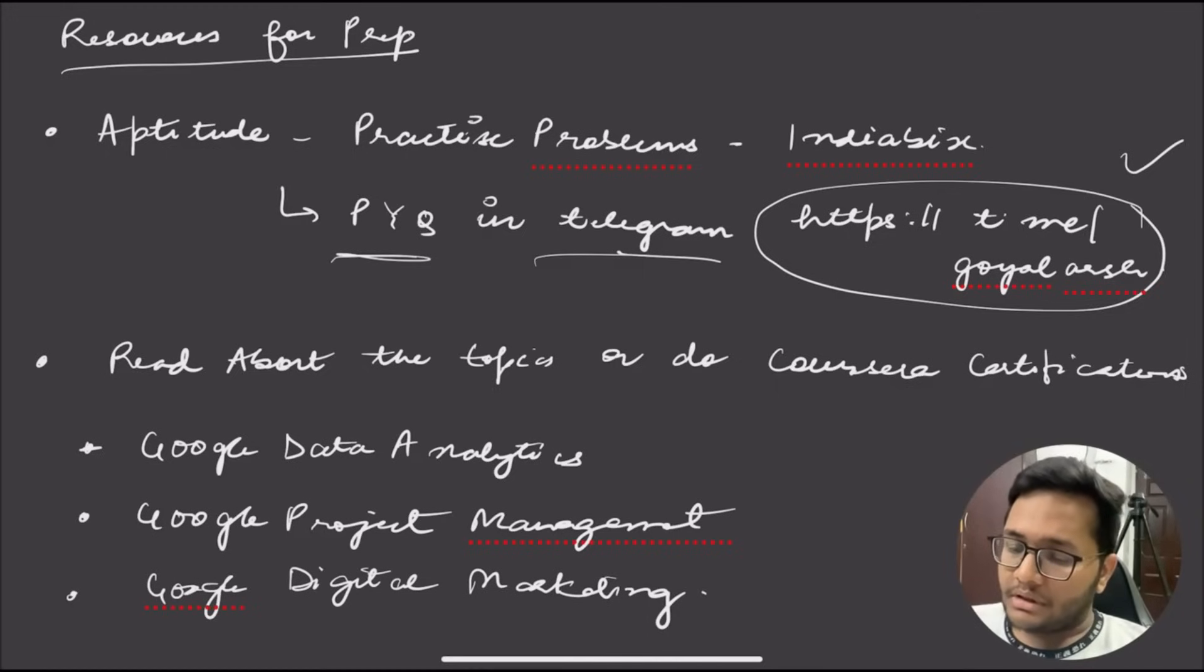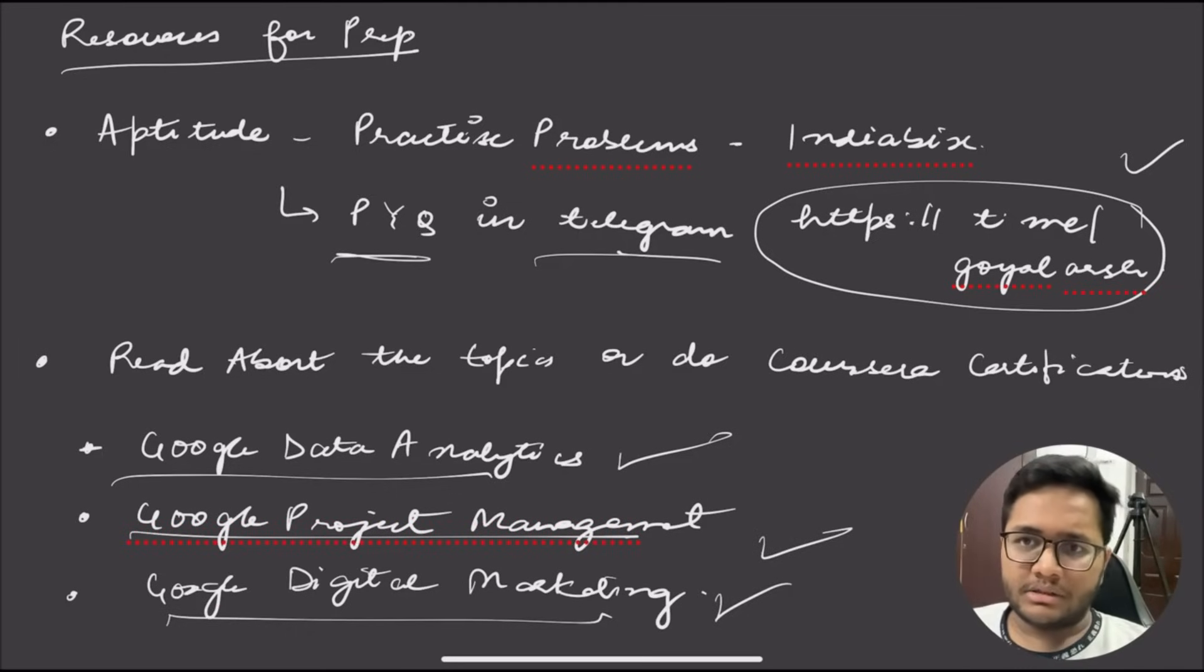Read about the topics or do Coursera certification courses. You can access these courses for free on Coursera - there's Google Data Analytics certificate, Google Project Management certificate, and Google Digital Marketing certificate. It's a 10-12 hour course on Coursera. You don't need the certificate to learn - the certificate is paid, but you can study the content for free. That's important, so consider this for your preparation.